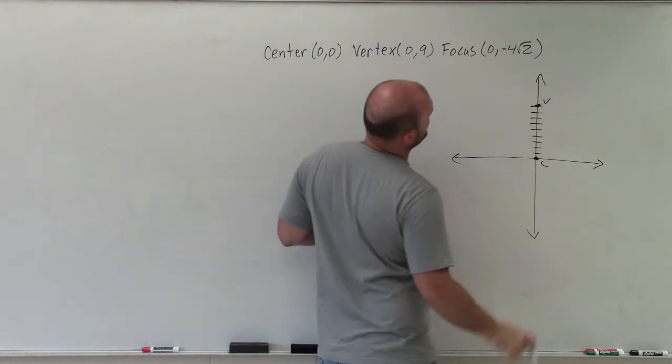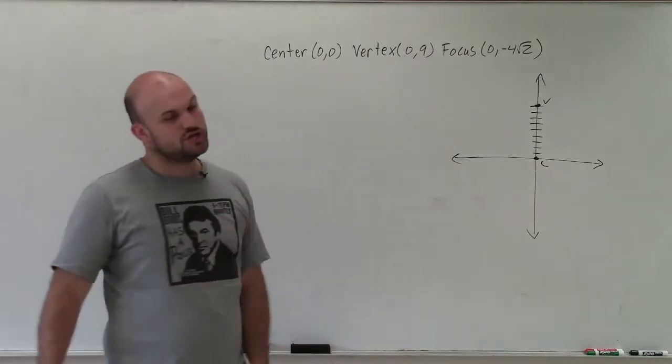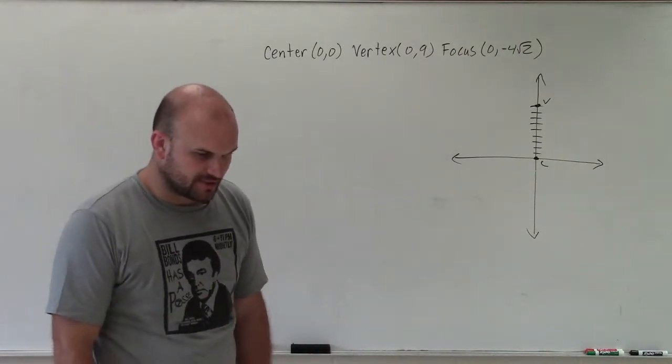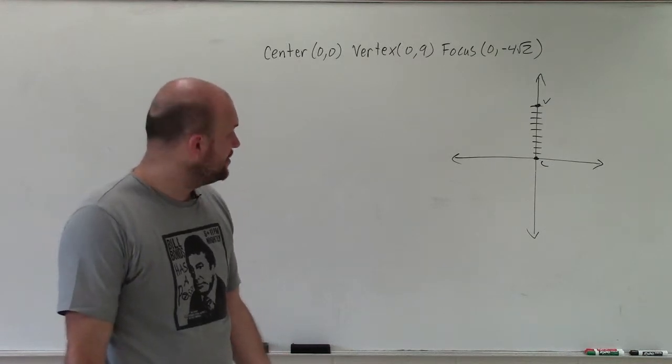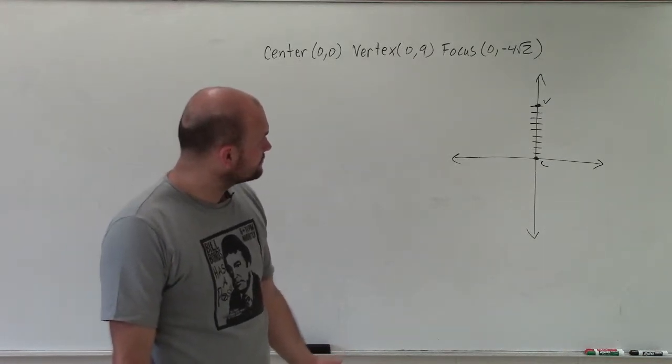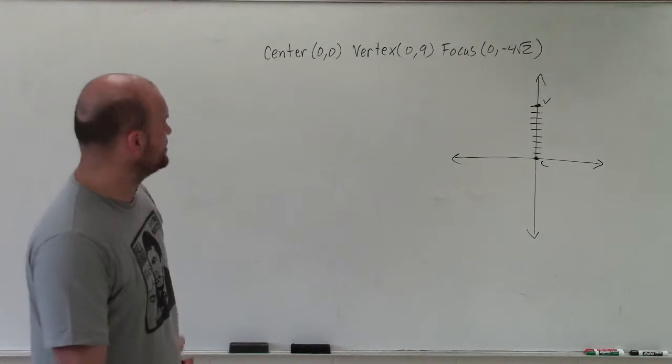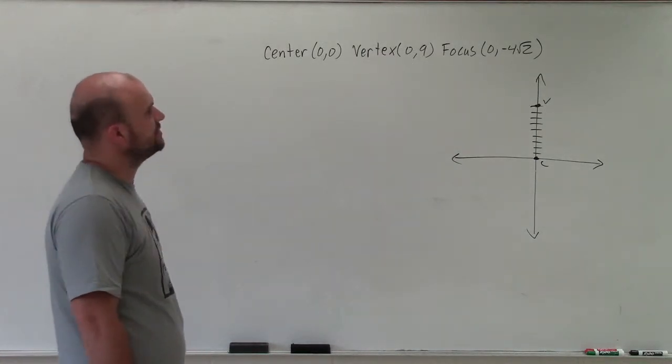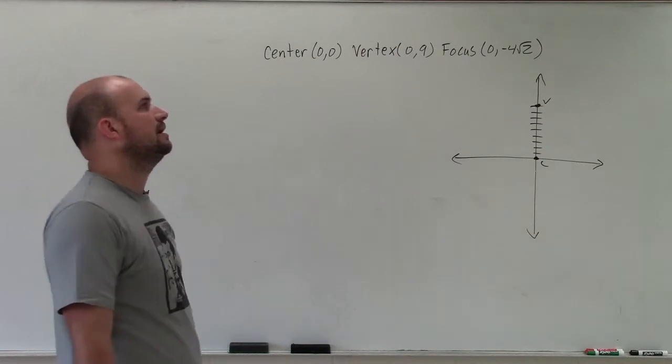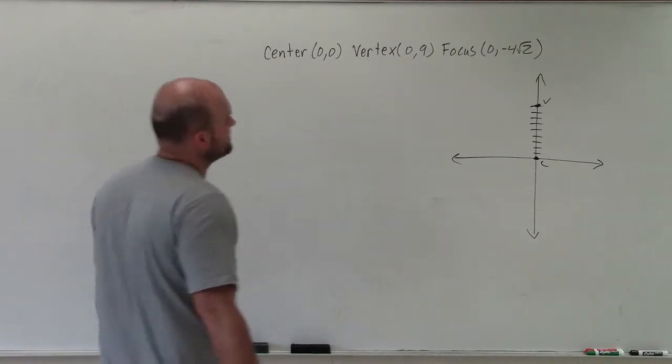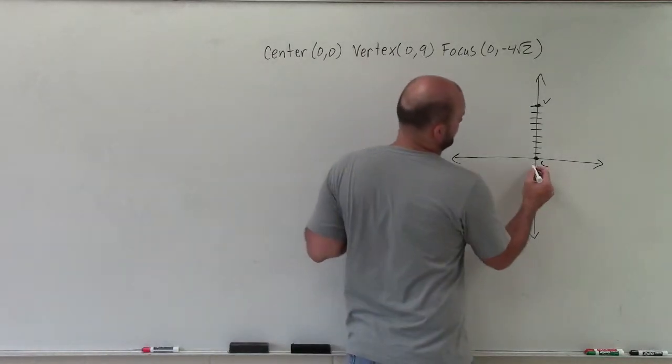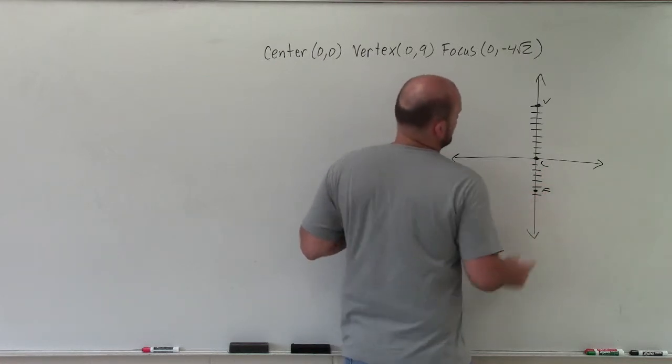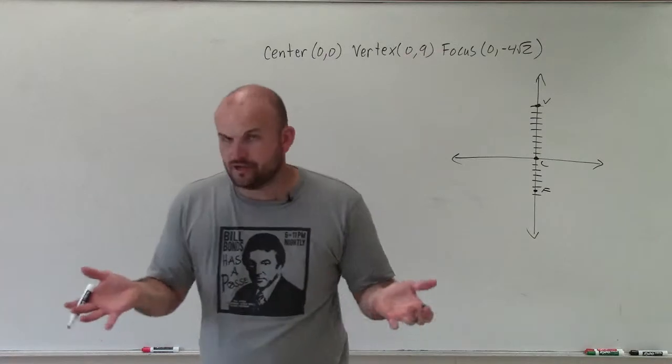And our focus is at (0, -4√2). So that would be around -5.6 in decimal. So that'd be like 1, 2, 3, 4, 5, 6. I'm just estimating. You could obviously use a calculator and just multiply that.